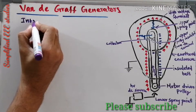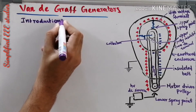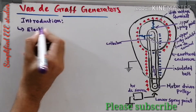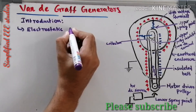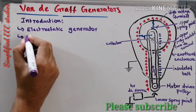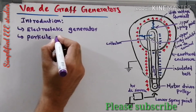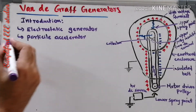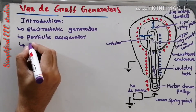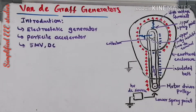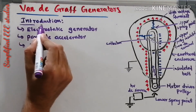What do you mean by Van de Graaff generator? The Van de Graaff generator is basically one of the electrostatic generators. It is also known as a particle accelerator. Furthermore, it is possible to generate voltage up to 5 megavolt DC — over 5 megavolt DC can be generated using the Van de Graaff generator. That's the basic idea.